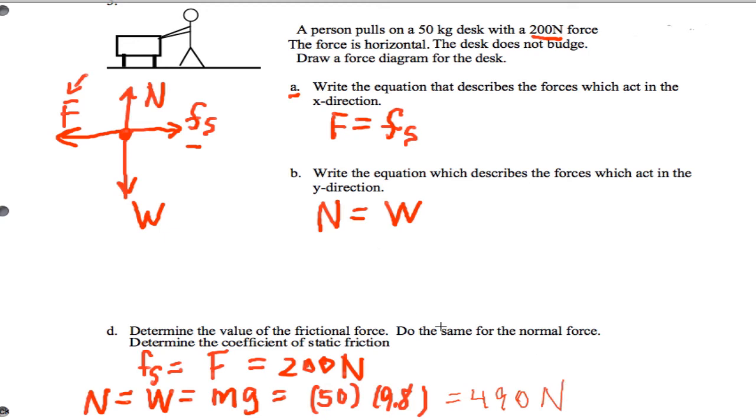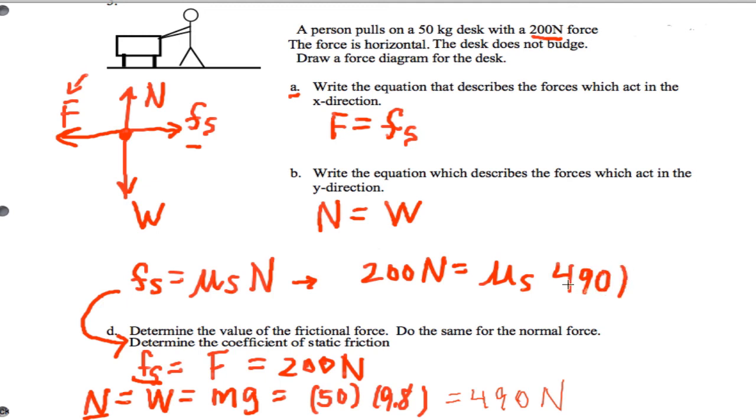Now they ask us to get the coefficient of static friction. Let's remember from our lab, we came up with the equation that the static friction equals the coefficient of friction times the normal force. So basically we can take this and this and obtain what they want. I'm going to say 200 Newtons equals mu times 490.